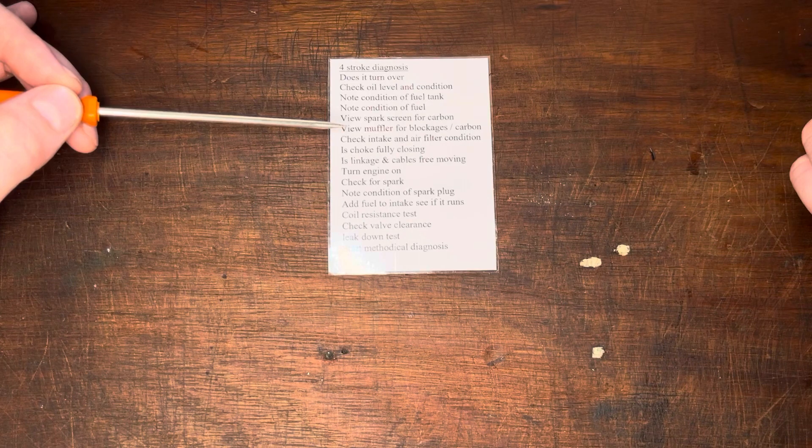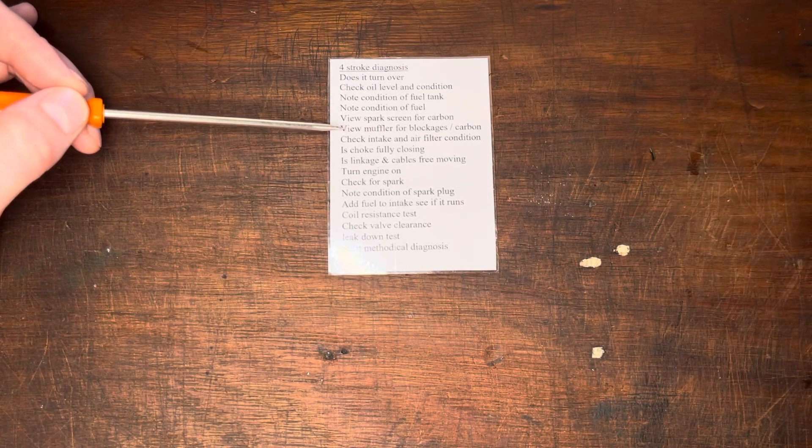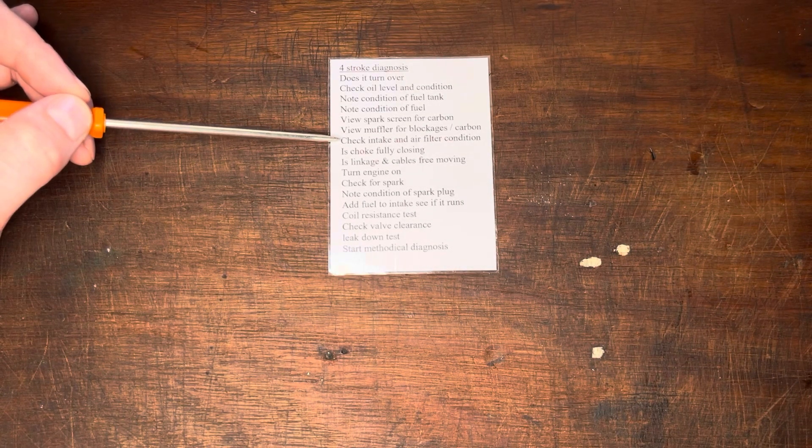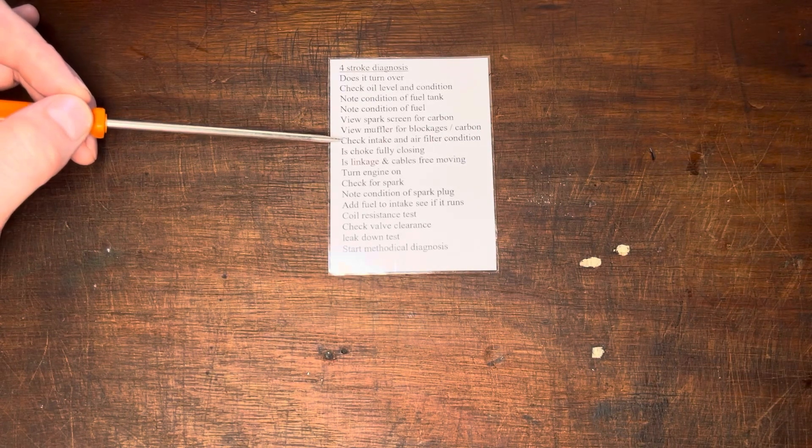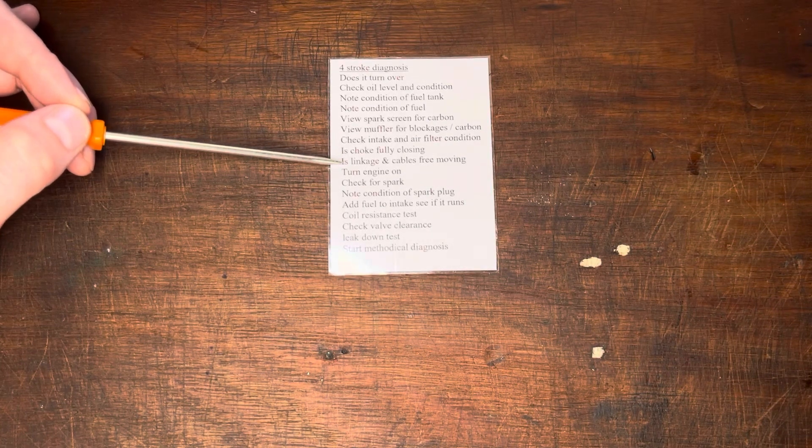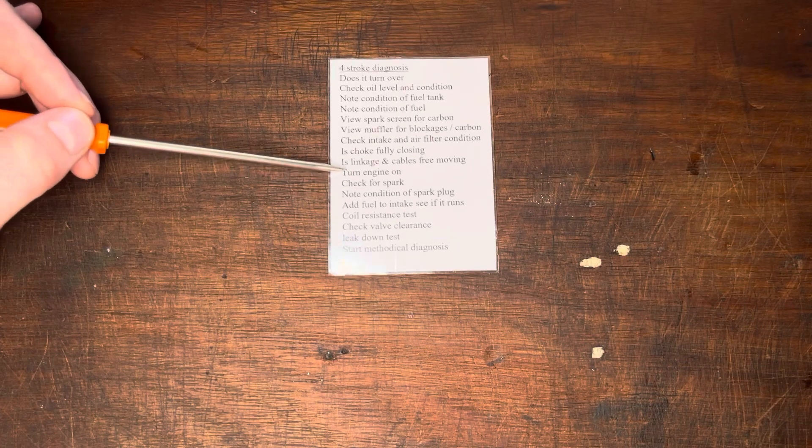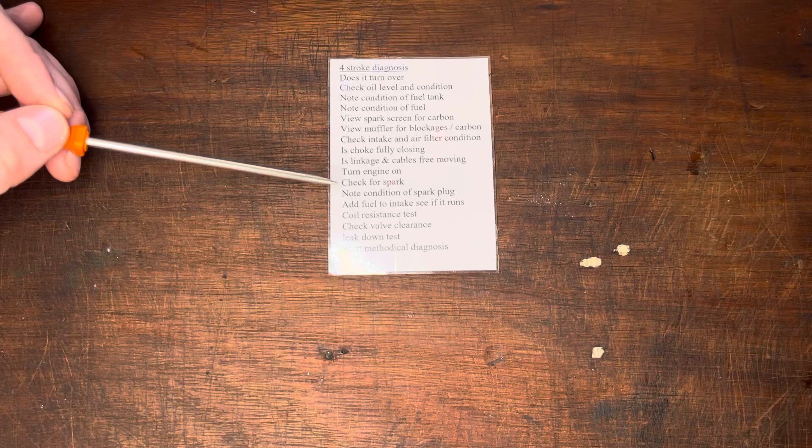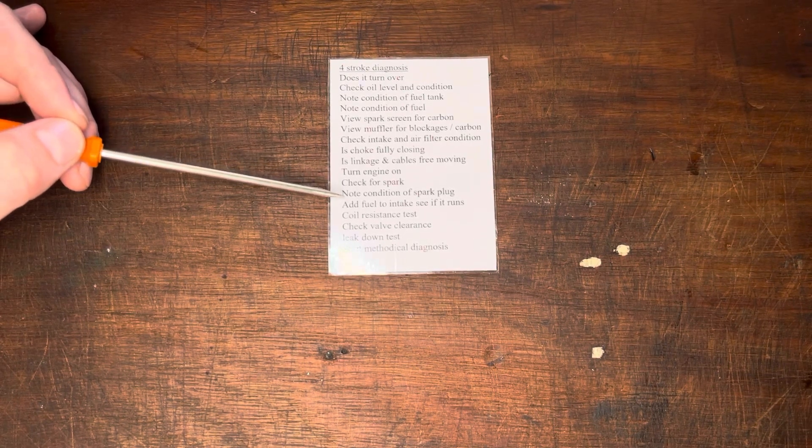Where are we? Muffler for blockages, carbon. Yeah, so you can always pop the muffler off and just have a quick look in there. There will be carbon in there, but the degree is not normally the same as there is generally on a two-stroke. Muffler for blockage. Intake, yeah, that's the same. Same principles applies last time. Same principles with the choke fully closing. Linkages are freely moving. And then we check engine, or turn the engine on for, check for spark, check the plug, condition, gap, make, model, those sorts of things.